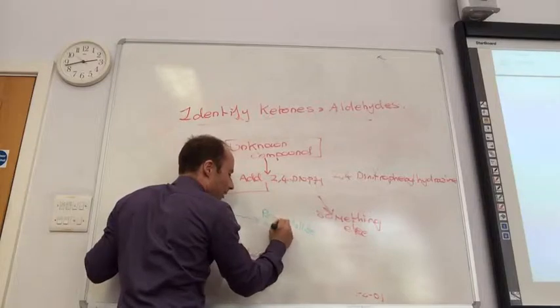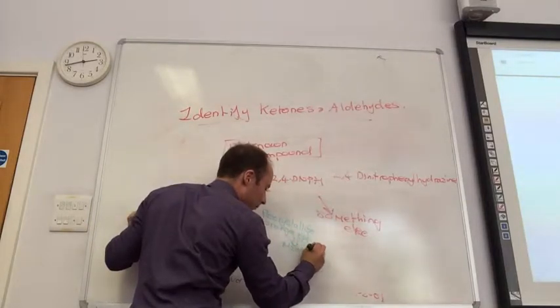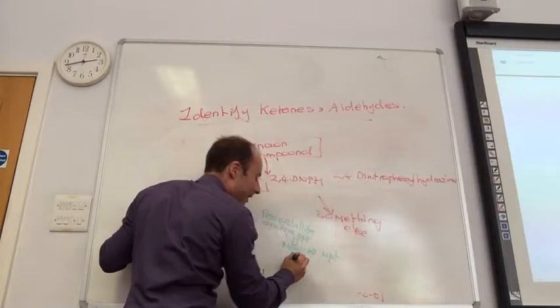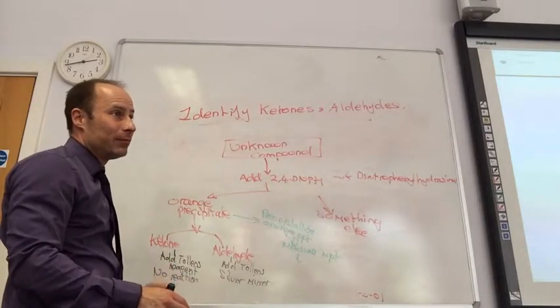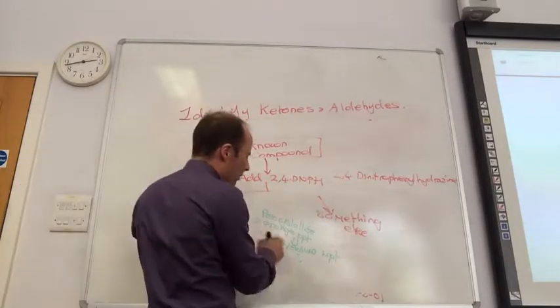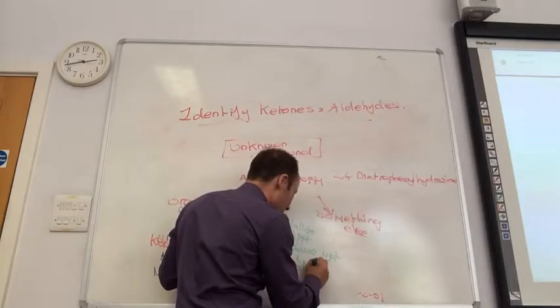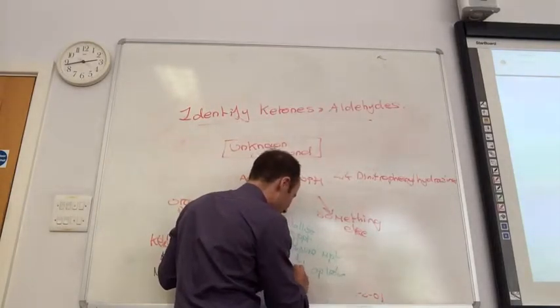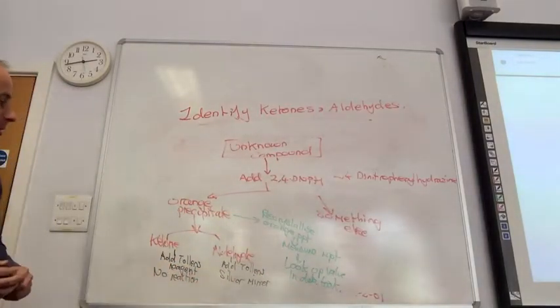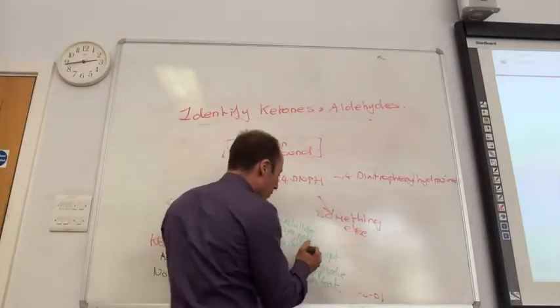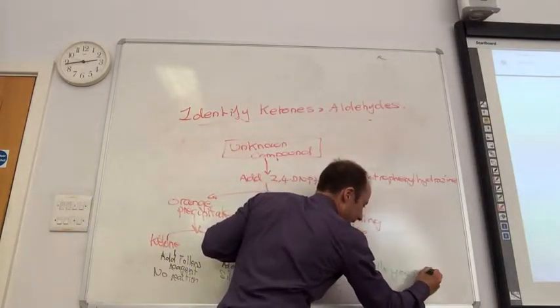So, recrystallise orange precipitate. You then measure its melting point. And then you look up in books of data. There's lots of books of data where very sad people measure lots of melting points for these orange precipitates. And you would measure melting point and then look up the value in data book. And that would tell you exactly which one you've got. So, this tells you the exact one you've got.